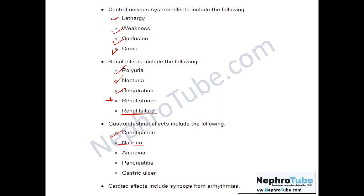Regarding the gastrointestinal effect, you will find constipation because of decreased excitability of the smooth muscles of the GI system. Constipation is associated with nausea and anorexia, and finally calcium precipitation in the pancreas can cause pancreatitis.